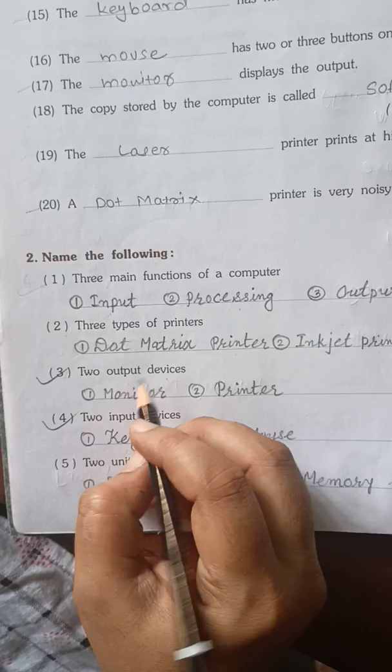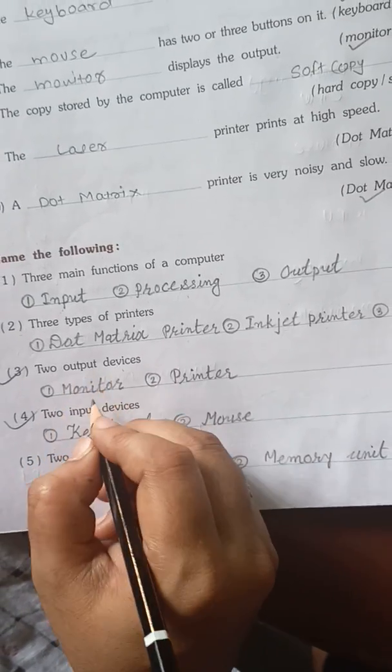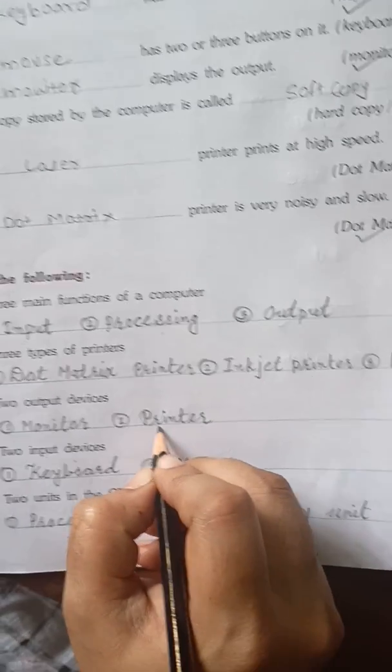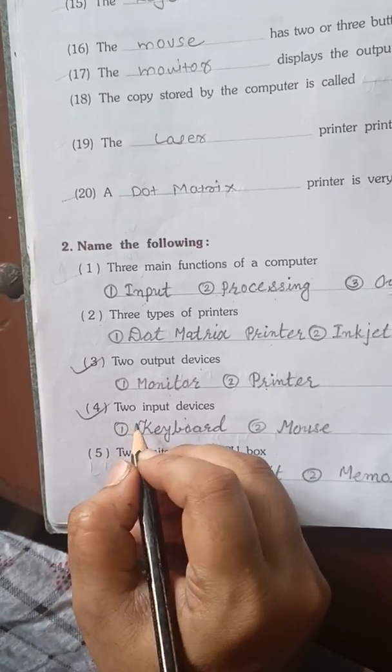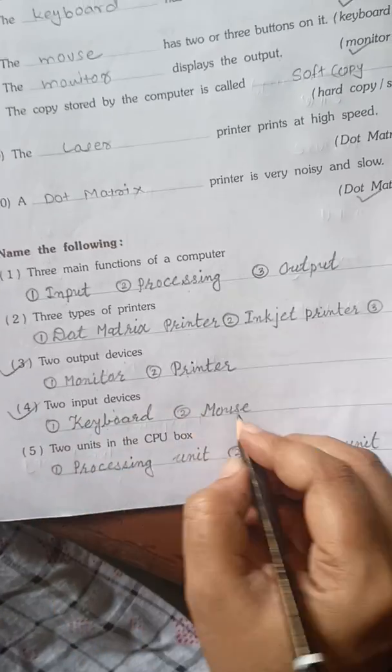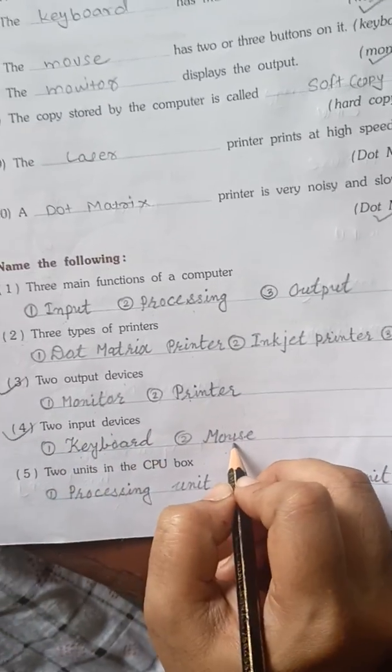Next, two output devices. Which are the two output devices? Monitor and printer. These are both output devices. Next, two input devices. Which are they? Keyboard and mouse. Keyboard and mouse.